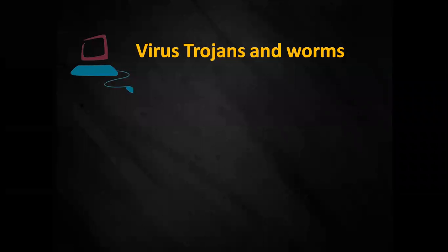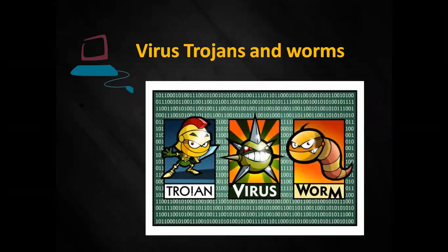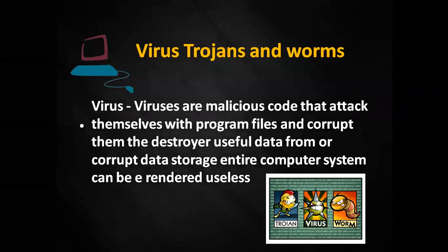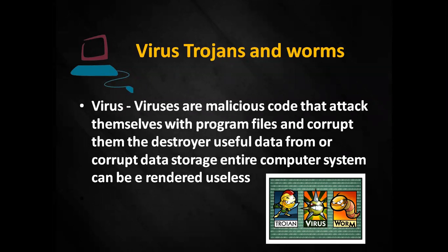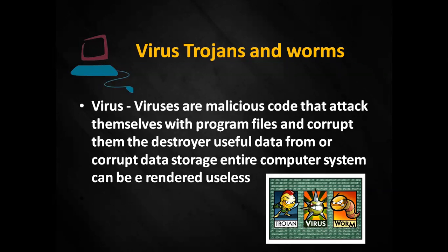Let's begin with the virus, trojan, and worms topic. These are three harmful programs for the computer that come through the internet. Viruses are malicious code that attaches itself to program files and corrupts them. They destroy or corrupt useful data from storage, and the entire computer system can become redundant and useless. This is a very dangerous program that attacks through the internet. Its effects include the computer getting slower, hanging, and copying itself — it is designed to harm the computer system.